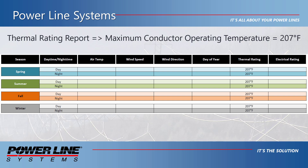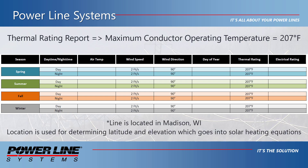Let's also assume that for all seasons we will subject the conductors to a two foot per second wind applied at a 90-degree perpendicular angle to the wires. We'll also assume our power line is located in Madison, Wisconsin, near the Power Line Systems office. Maximum seasonal temperatures for four seasons — spring, summer, fall, and winter — we will assume to be 72, 95, 63, and 35 degrees Fahrenheit respectively. For calculating solar radiation, let's assume a day in the middle of each of the four seasons: May 6th, August 7th, November 6th, and February 4th respectively.